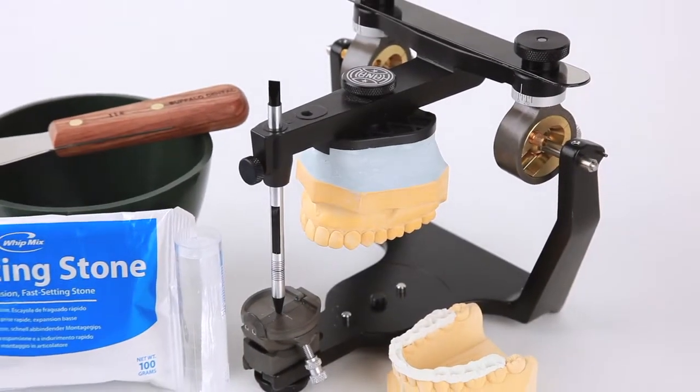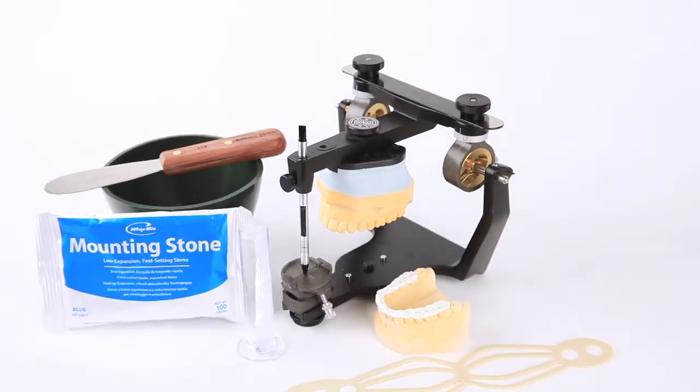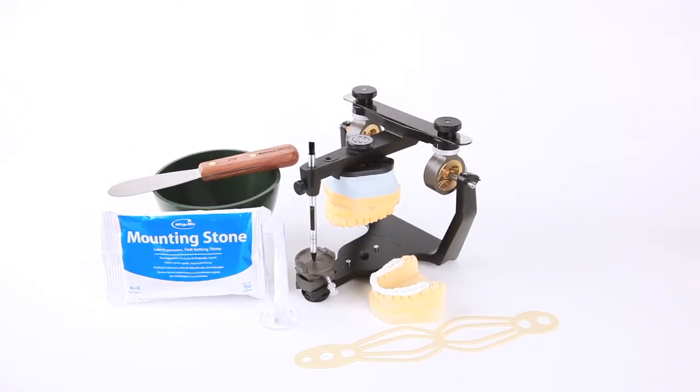This demonstration video is designed to show the proper use and advantages of the flexi-mount stabilization system when mounting casts to an articulator, which has a thumb screw on the top arm of the articulator. This demonstration also shows mounting of the casts with bite registration.